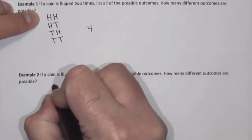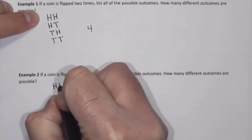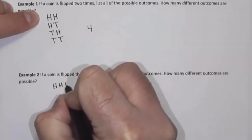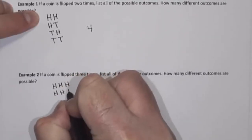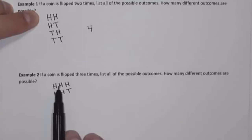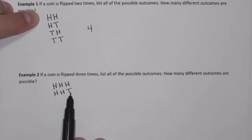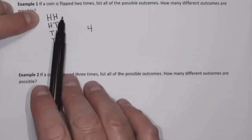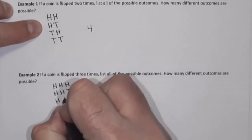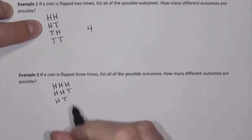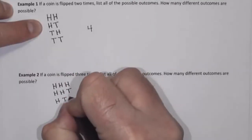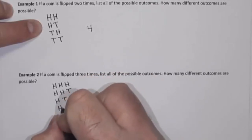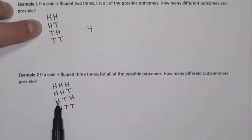If we get heads on the first flip and heads on the second flip, then we could get heads or tails on the third flip — giving us heads-heads-heads or heads-heads-tails. If we get heads on the first flip and tails on the second flip, then for the third flip we could get heads or tails, giving us heads-tails-heads or heads-tails-tails.